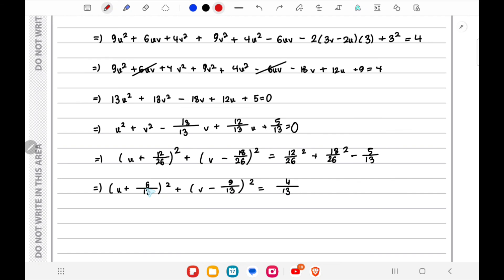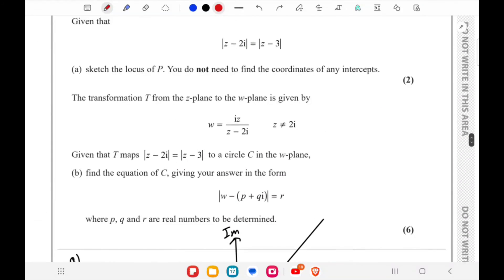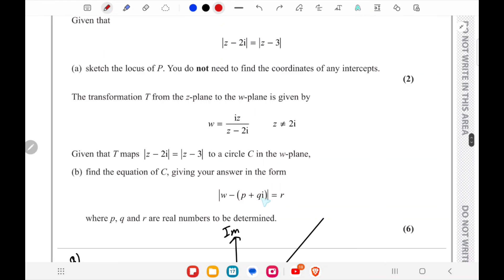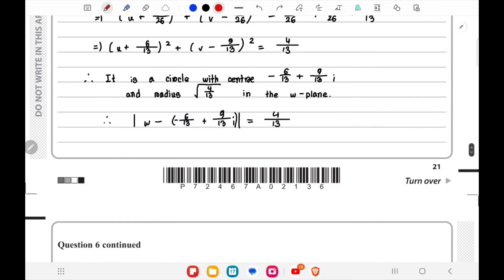So we can write that down: it is a circle with center (-6/13, 9/13) and radius √(4/13). They wanted it in modulus form, so we'll write the equation in modulus form.